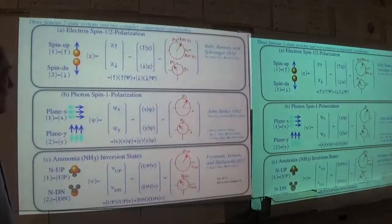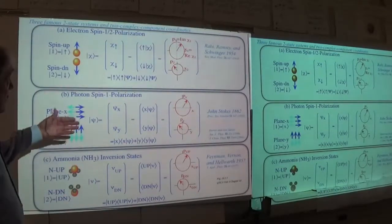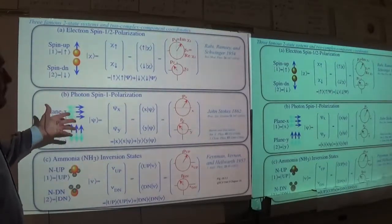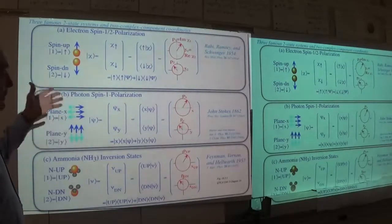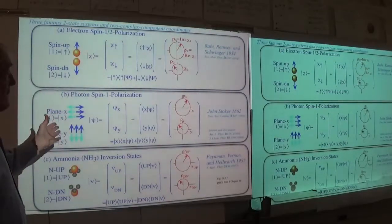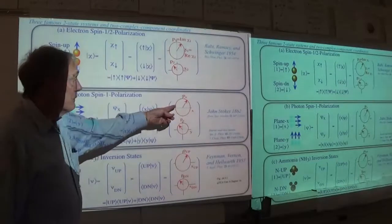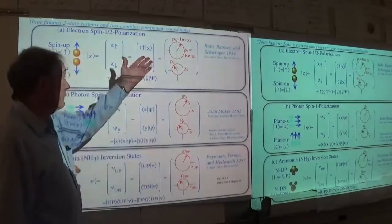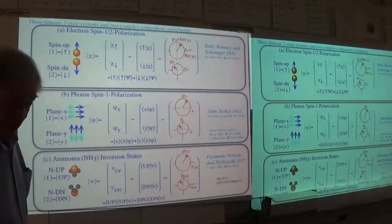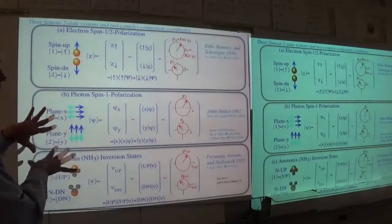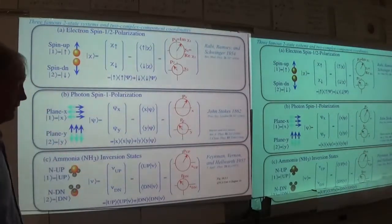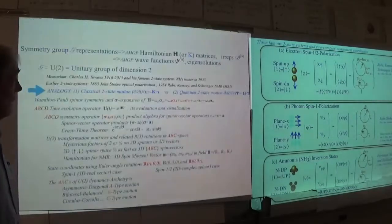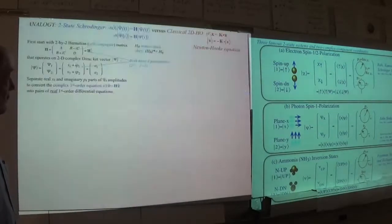Eventually, the electromagnetic polarization example is the easiest to understand — you can think of it classically. You're using complex numbers to just track the phase, and that's true for all the others too. These are precisely mathematically analogous, and we need to see the details of that analogy.